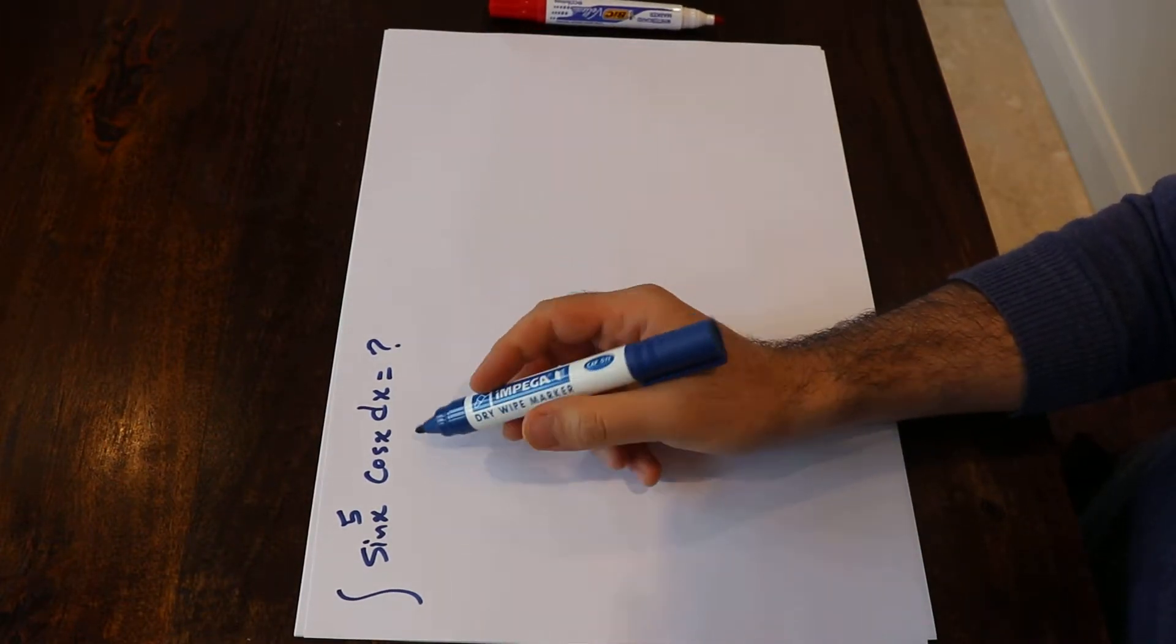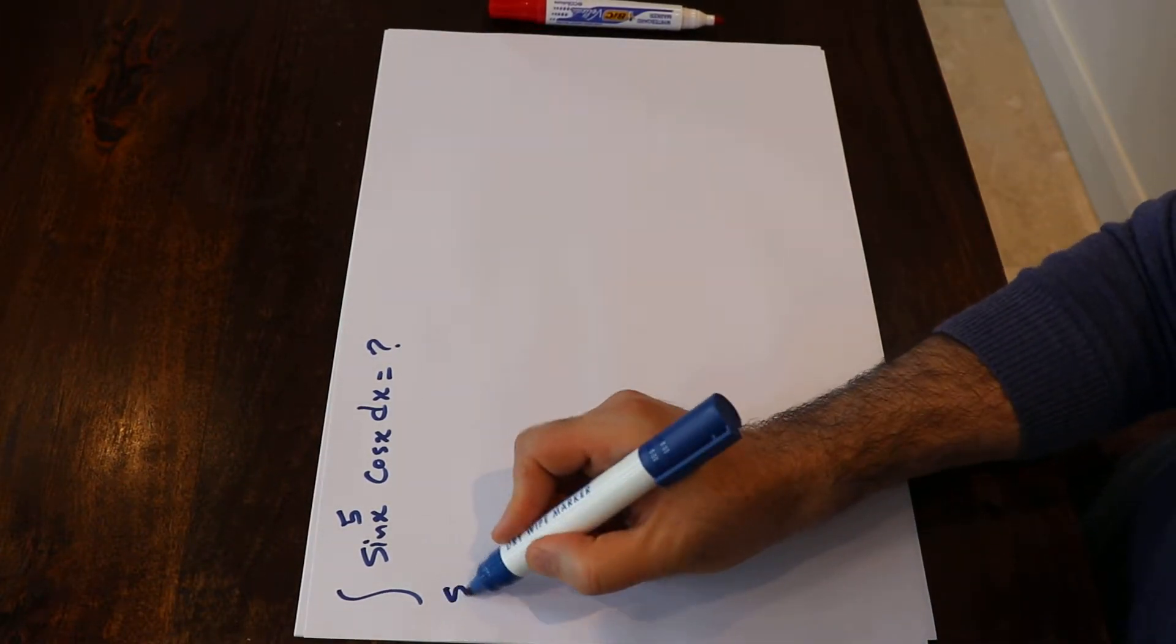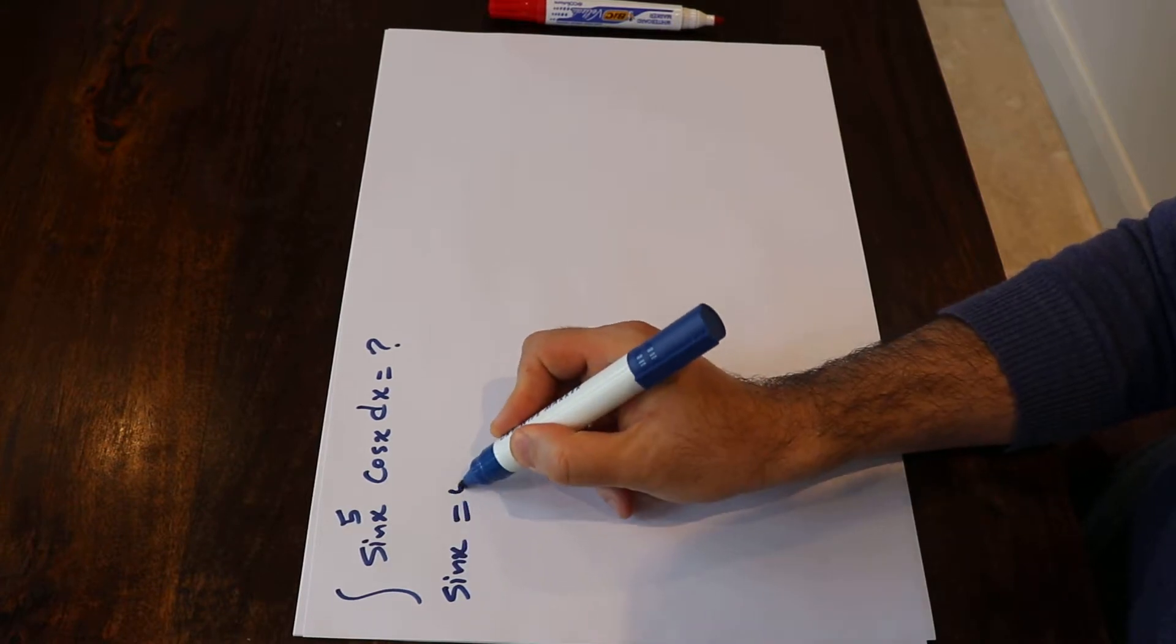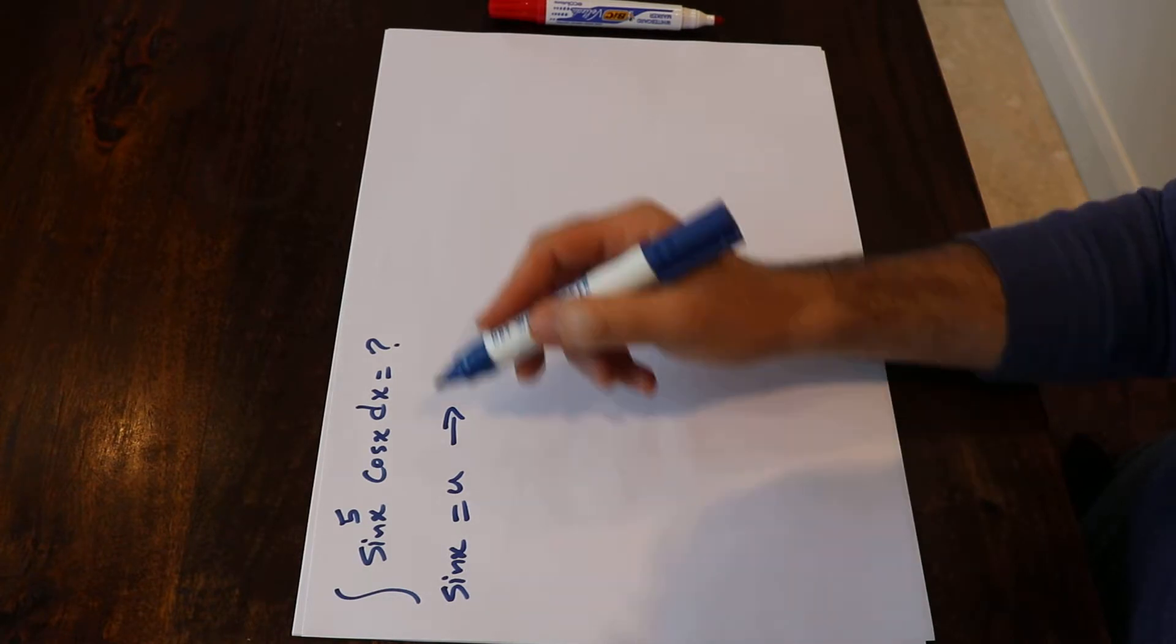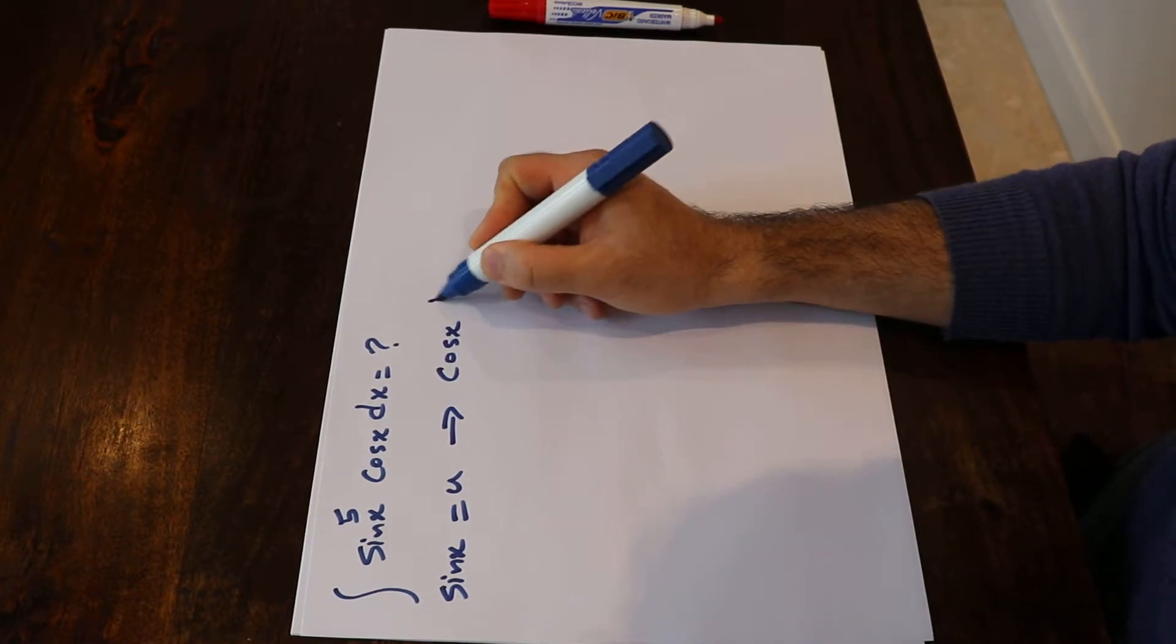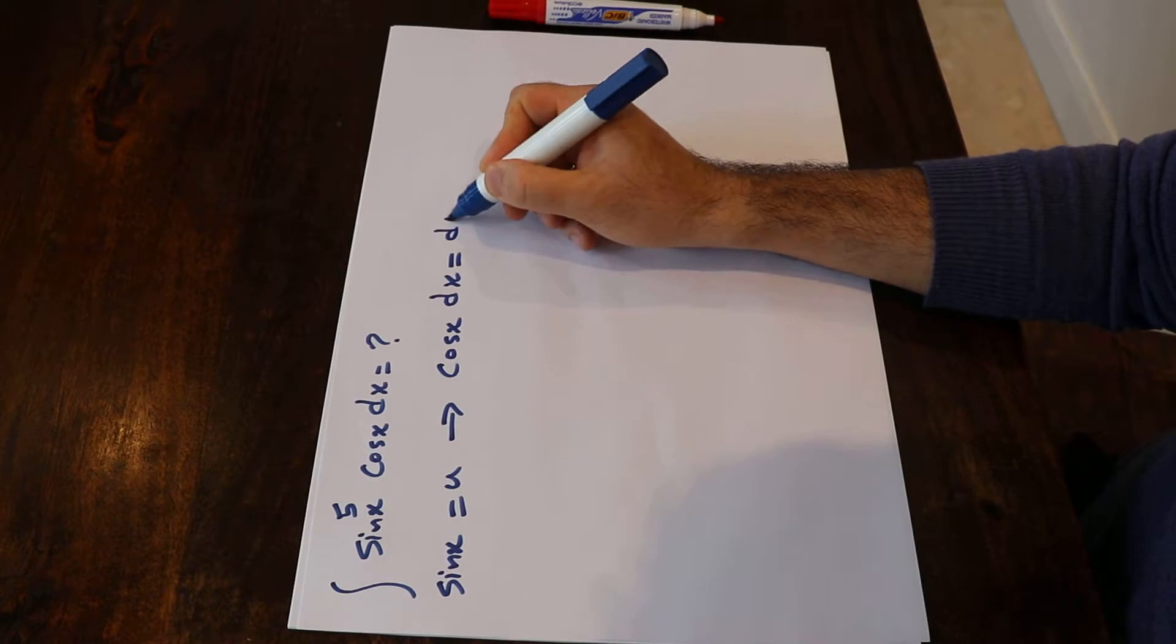To solve this integral you need to use the substitution rule. So if you define sine x as u and if you take the derivative from each side of this equation, you get the derivative of sine x will be cosine x dx, which will be equal to du.